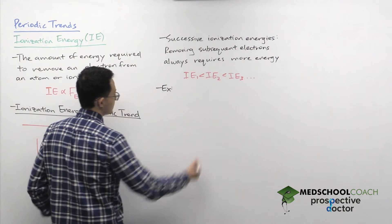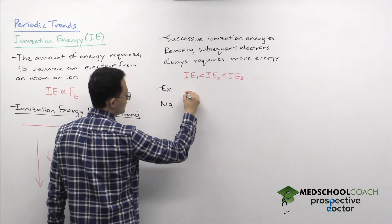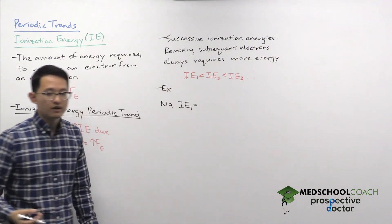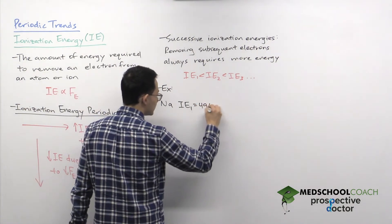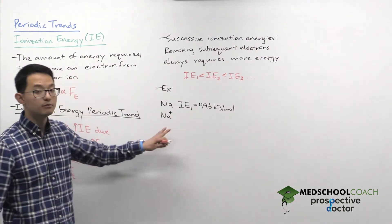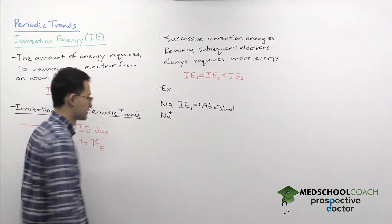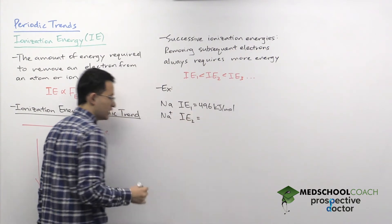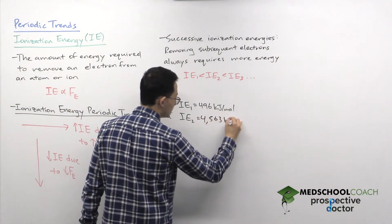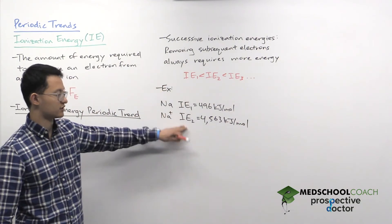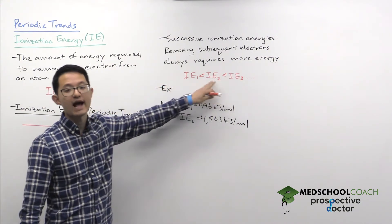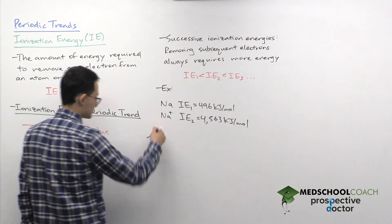Let's look at the ionization energy of sodium. This is the first ionization energy because sodium is a neutral atom, and it has a value of 496 kilojoules per mole. The second ionization energy — removing an electron from Na⁺ — is 4,563 kilojoules per mole. The second ionization energy is larger than the first, which makes sense because subsequent ionization energies must always be greater.